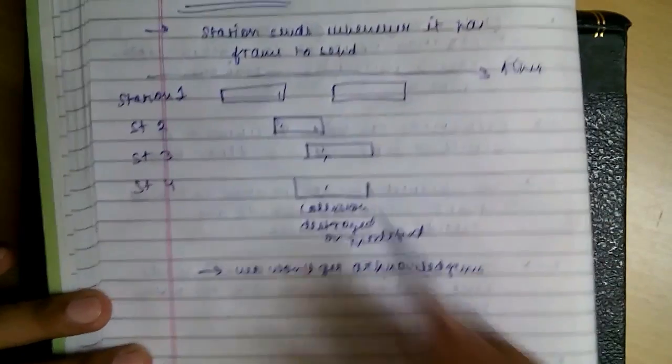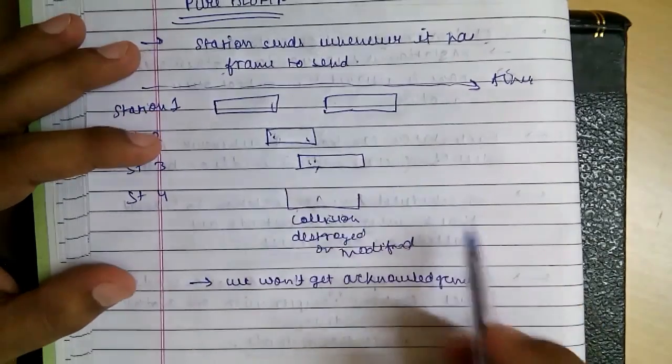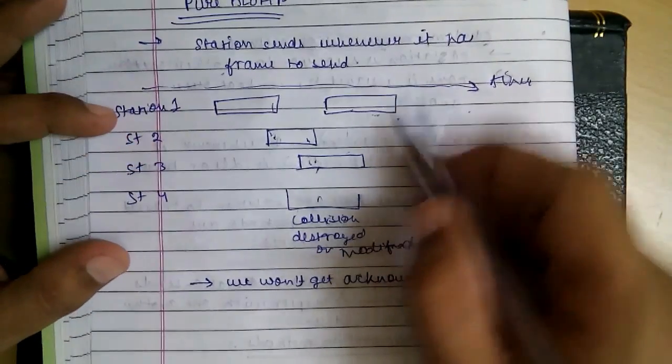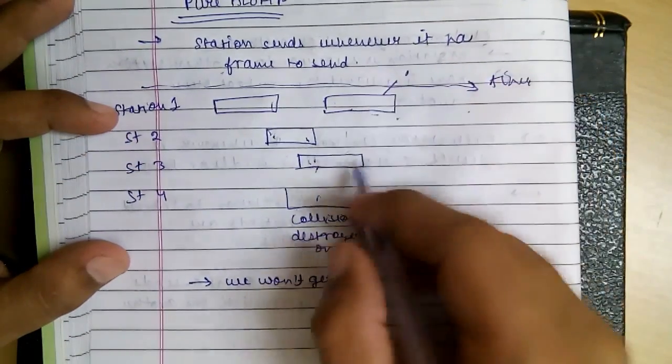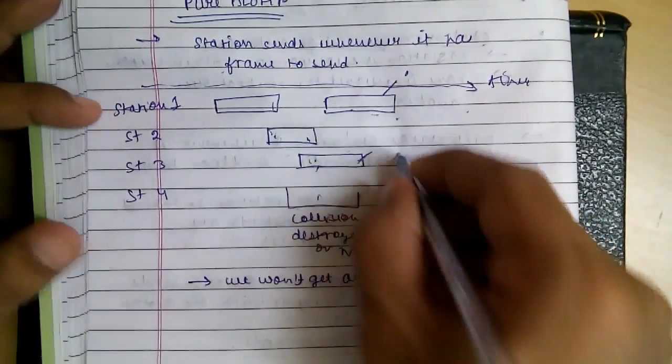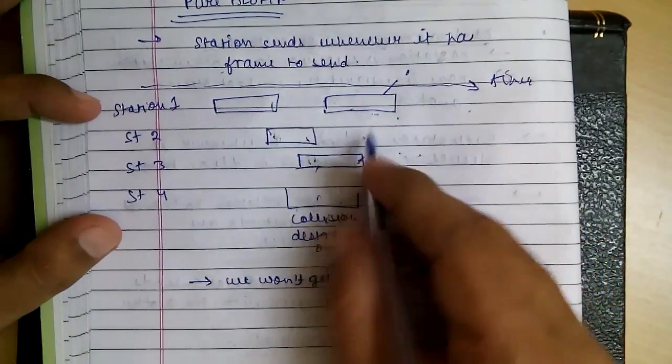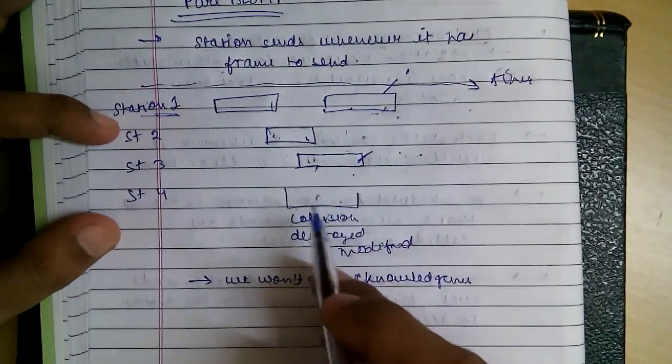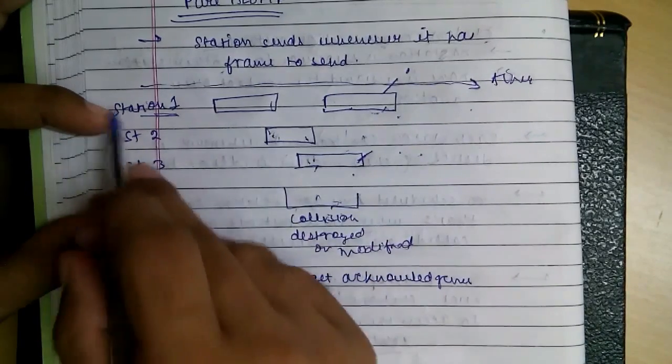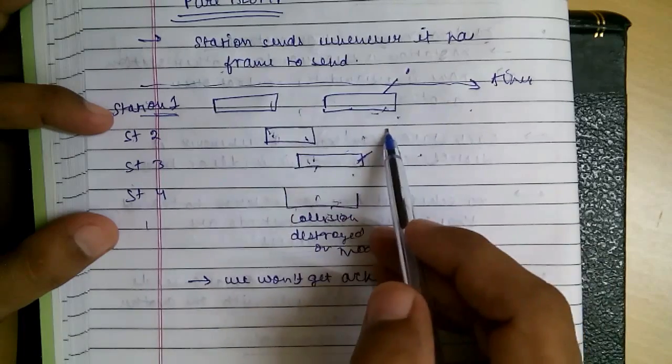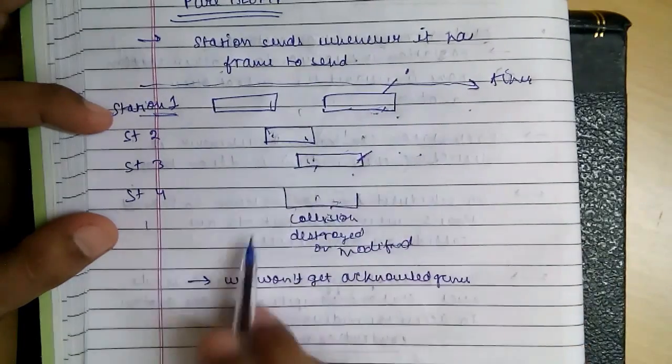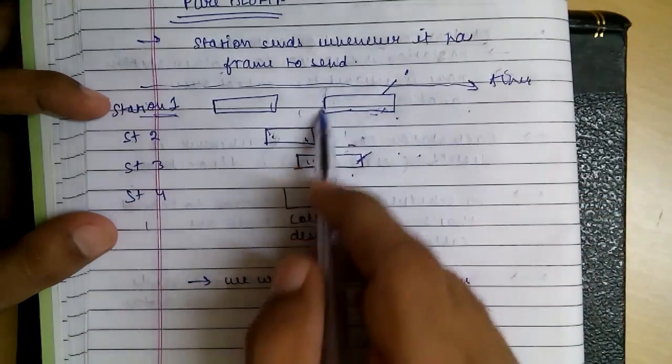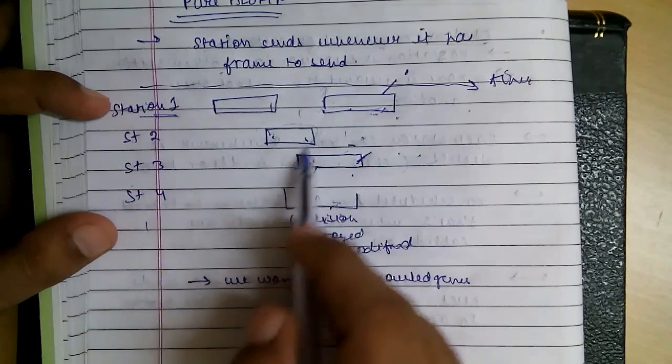This frame is in the collision, so it is destroyed and the timer of this frame will expire. When the timer expires, station 1 will send again, station 3 will send again. As their timers expire at the same time, this situation will occur again as they will all resend and the same kind of plot will be there.